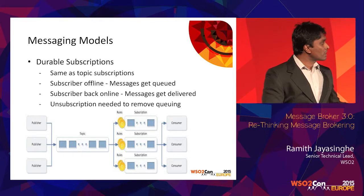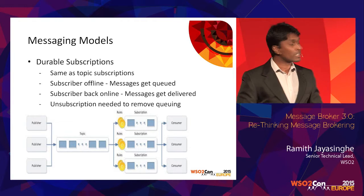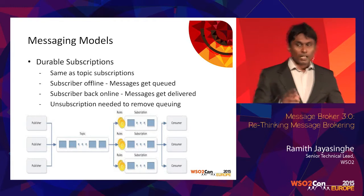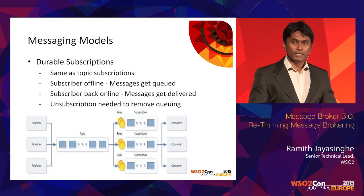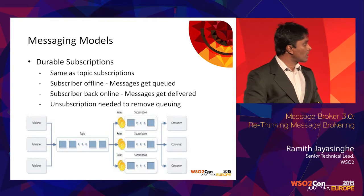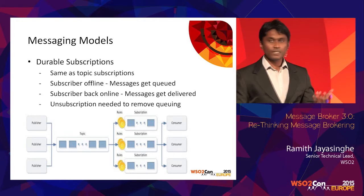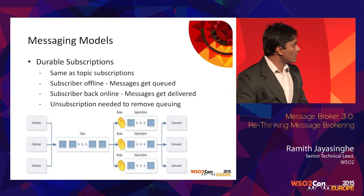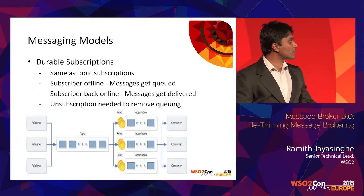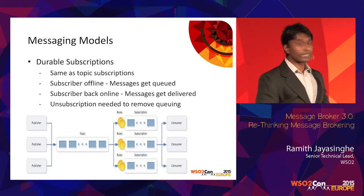There is another variation, which is almost the same as the pub-sub model, but we call it durable subscription. Here the receiving party doesn't have to be online. When the message is sent, it's stored by the broker, and when the receiving party comes online it gets delivered. When you no longer want messages, you explicitly have to say unsubscribe. That's what we call durable subscriptions.